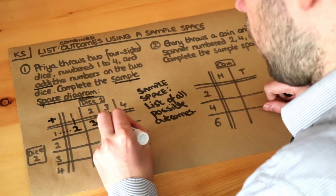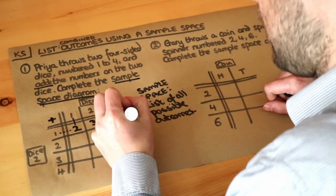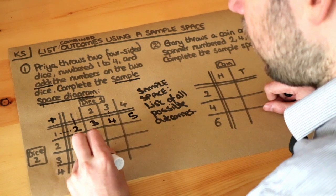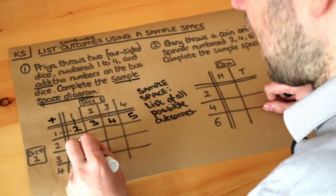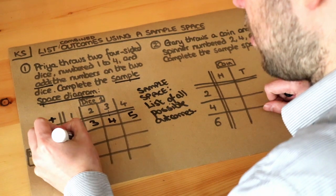We do three plus one, that's four. Four plus one is five. And going down, we've got the one on the first dice, the two on the second dice, going down and across. So one plus two is three.